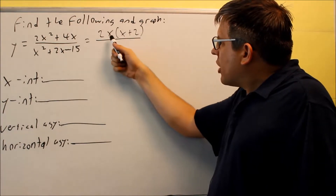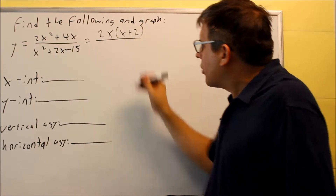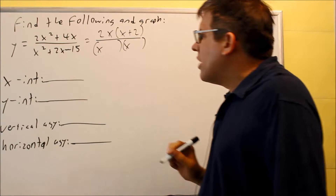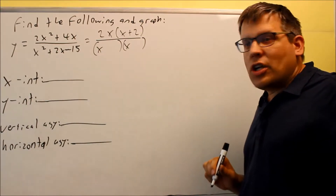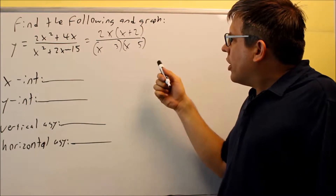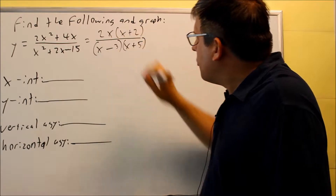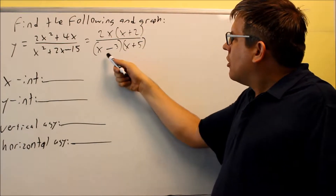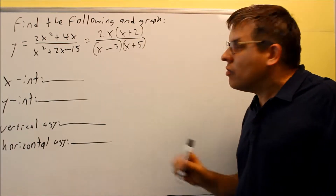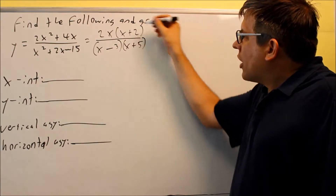You can always check your factoring by multiplying back through — you should get the same thing you started with. For the bottom, we factor similarly: the factors of 15 are 3 and 5, and to get a positive 2 in the middle we use plus 5 and minus 3, giving positive 5x minus 3x = positive 2x, and 5 times negative 3 gives negative 15. This works out, and nothing cancels.